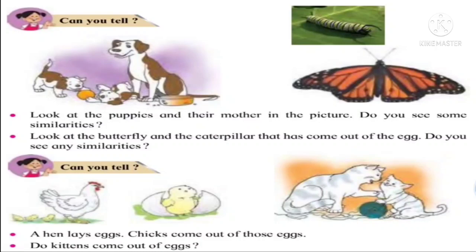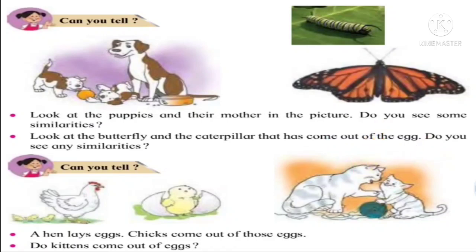The next picture is a cat with its kitten. Do kittens come out of eggs? No — cats give birth to a young one, a small cat which is called a kitten.